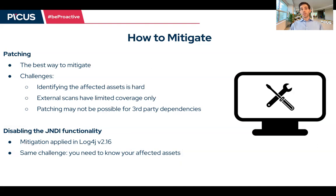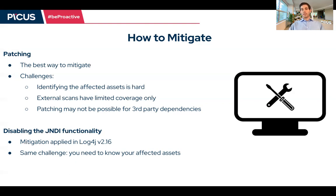The second option would be disabling the JNDI functionality, which is at the root of this vulnerability. This is exactly what the latest patch version does — version 2.16. But the challenge here, again, is if you want to disable it manually, you still need to know what systems are affected.